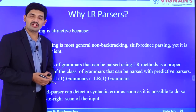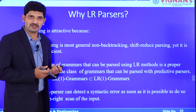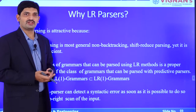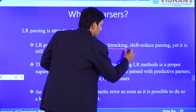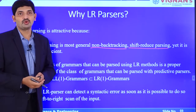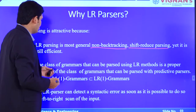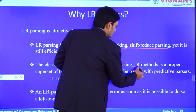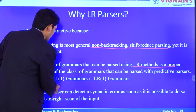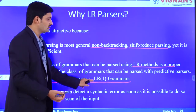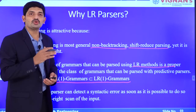Why are we going to learn about LR parsers? Because we already learned about top-down parsers like LL1, recursive descent parser, and operator precedence parser. The LR parser is the most general, non-backtracking, shift-reduce parser. It does not suffer from the problem of left recursion or left factoring. LR methods are a superset of all remaining parsers — LL1 grammar is a subset of LR1 grammars, meaning LR parsers can parse most grammars.